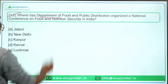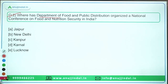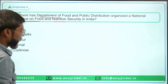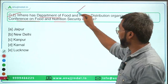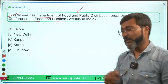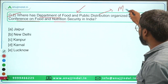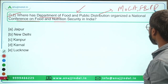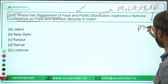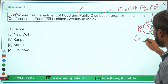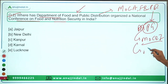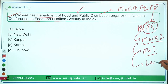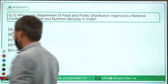Question number two: where has the Department of Food and Public Distribution organized a national conference on food and nutrition security in India? This department is under the Ministry of Consumer Affairs, Food and Public Distribution, which is headed by Mr. Piyush Goyal, who is also the Minister of Commerce and Industry and Minister of Textiles, and the Leader in the Rajya Sabha.